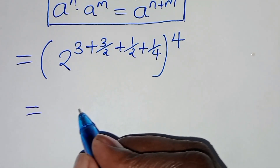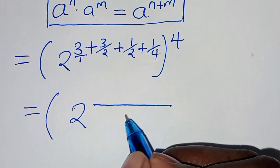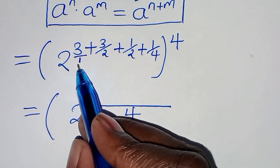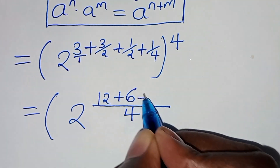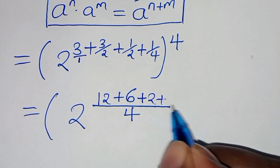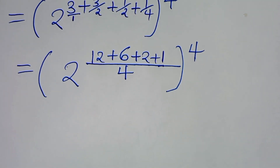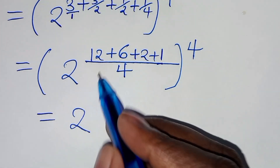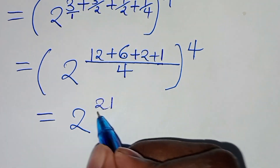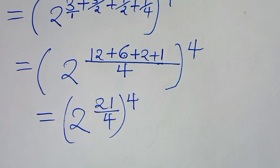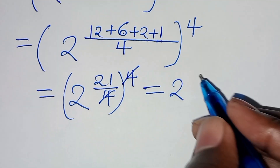This implies we have 2 to power — let's find the LCM. The LCM of 1, 2, and 4 is 4. So: 4 divided by 1 is 4, times 3 is 12; plus 4 divided by 2 is 2, times 3 is 6; plus 4 divided by 4 is 1, times 1 is 1. So we have 2 to power 12 plus 6 equals 18, plus 2 equals 20, plus 1 equals 21, over 4, raised to power 4. The 4s cancel, giving us 2 raised to power 21.